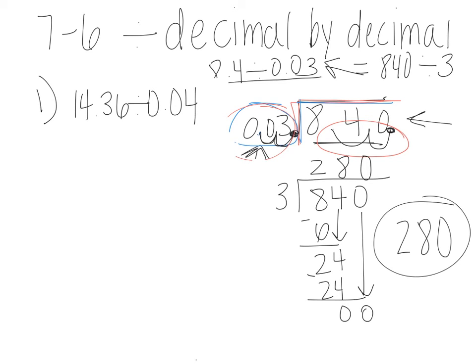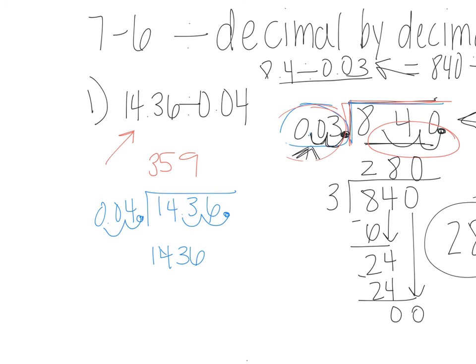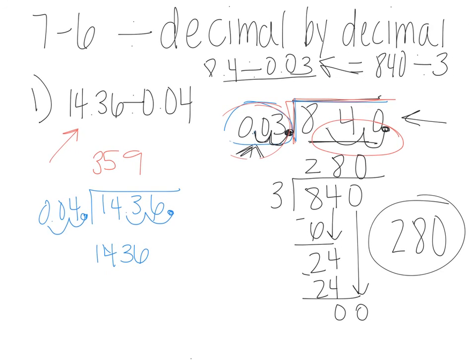All right hopefully you paused the video and you tried this problem over here. The answer should be 359 and how I would get that is I'm gonna stack and write my problem like this. I need to move this decimal point to the right twice to get a whole number and this one to the right twice so I end up with 1436 which is right over here and then I am dividing that by 4, the whole number 4.